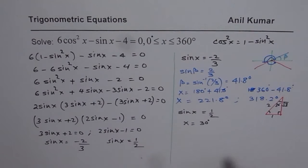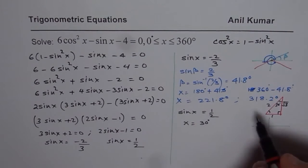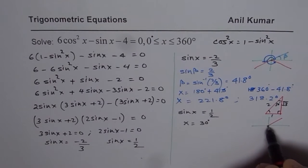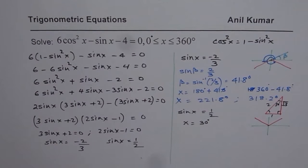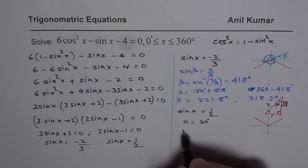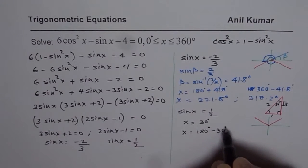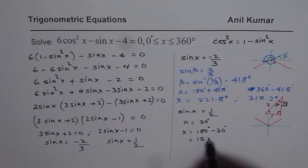However, sin is positive in 2 quadrants. So it is positive in 2 quadrants. So we are looking for 30 degrees in quadrant 1, acute angle 30 degrees in quadrant 2. So we have 2 solutions. One is 30, the other one is 180 degrees minus 30 degrees. That is 150 degrees.